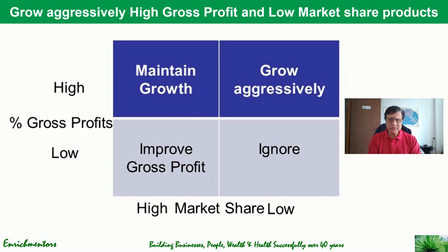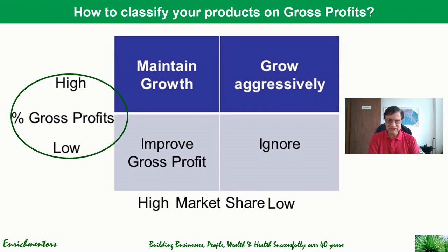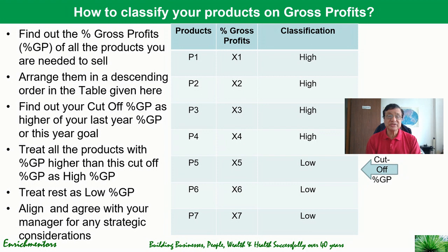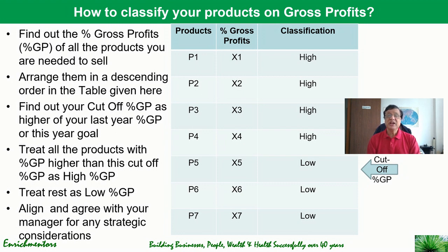Now, how do we classify products on gross profit into high and low? First, find out the percentage gross profits of all the products you need to sell — some may be new, but most will be existing products. Arrange them in a table in descending order of gross profit: P1 to P7, where P1 has the highest gross profit X1 and P7 has the lowest gross profit X7.